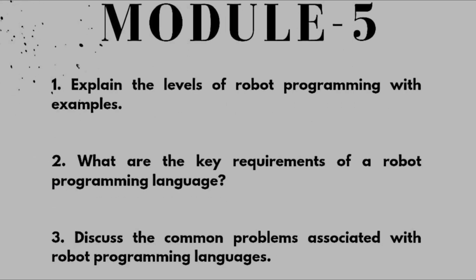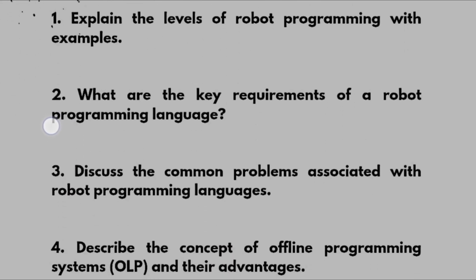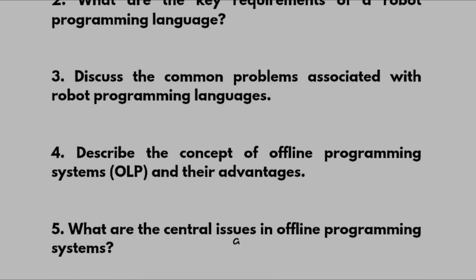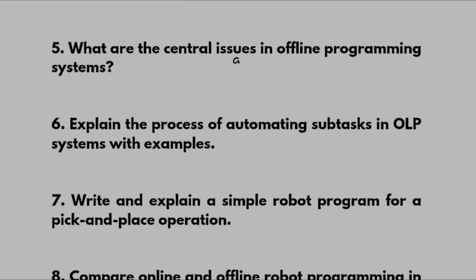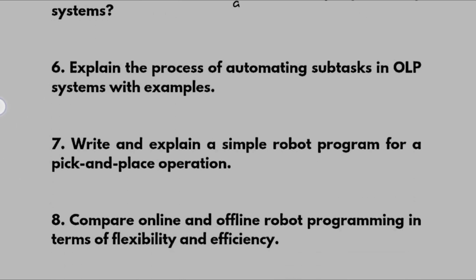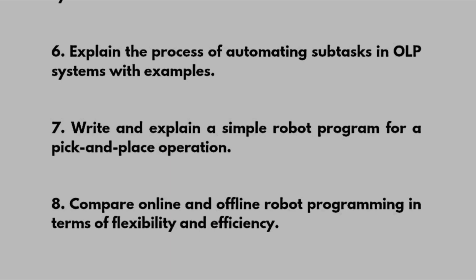For Module 5, explain the levels of robot programming with examples. What are the key requirements of a robot programming language? Discuss the common problems associated with robot programming languages. Describe the concept of offline programming systems and their advantages. What are the central issues in offline programming systems? Explain the process of automating subtasks in OLP systems with examples.